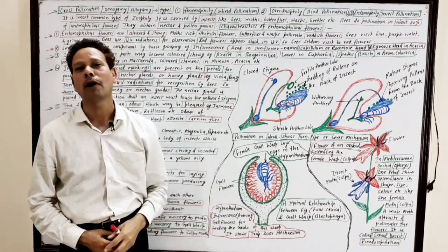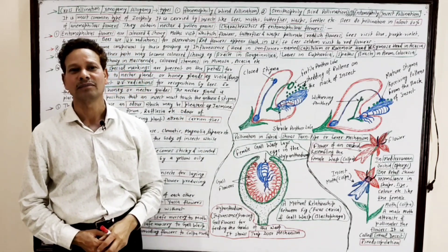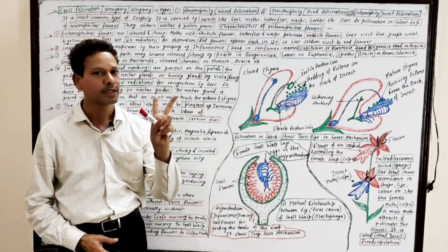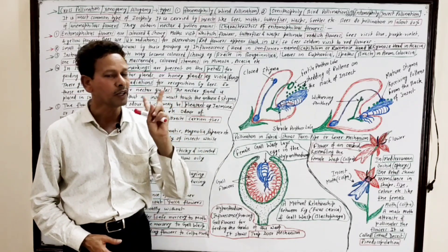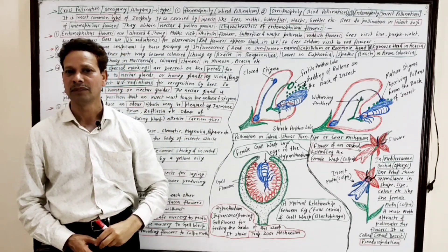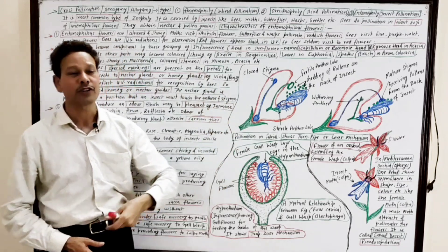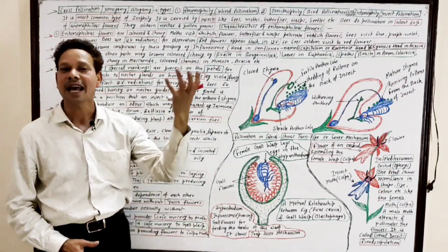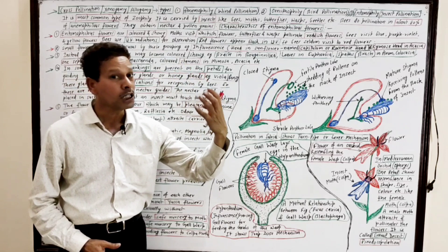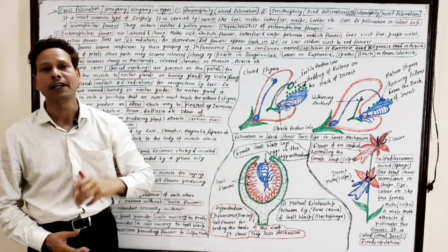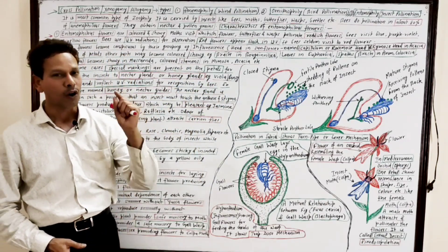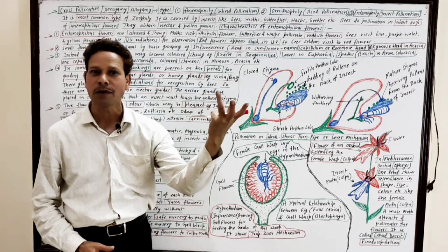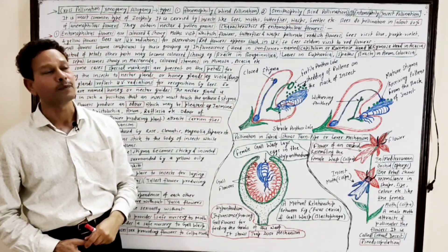Dear students, this is the third lecture of pollination. As we know, pollination has two types: self-pollination and cross-pollination. Cross-pollination is xenogamy, it is allogamy, and cross-pollination requires some pollinating agents. On the basis of pollinating agents, cross-pollination has the following types.